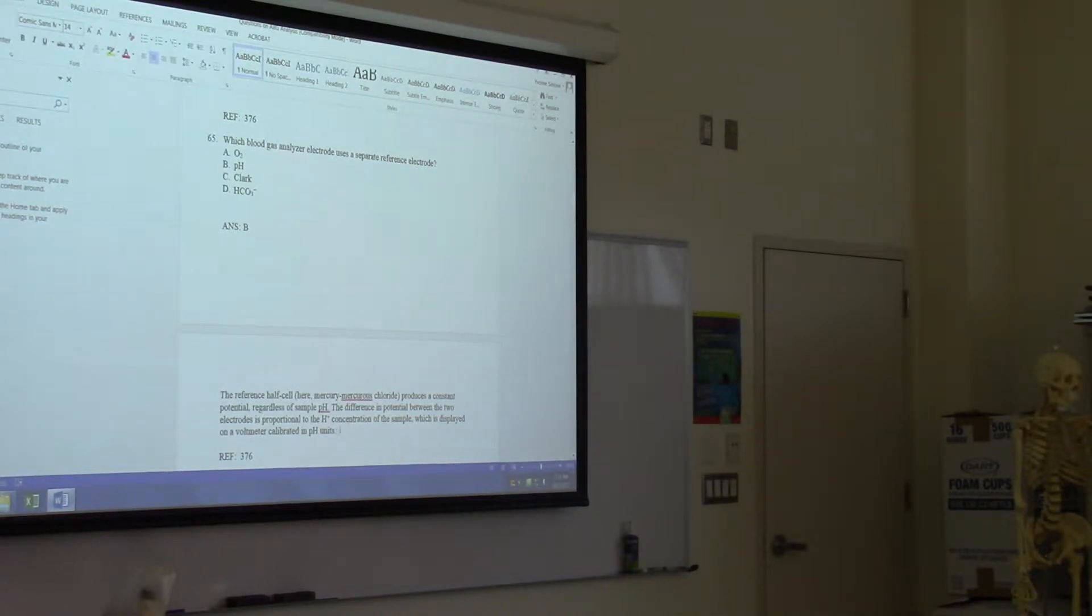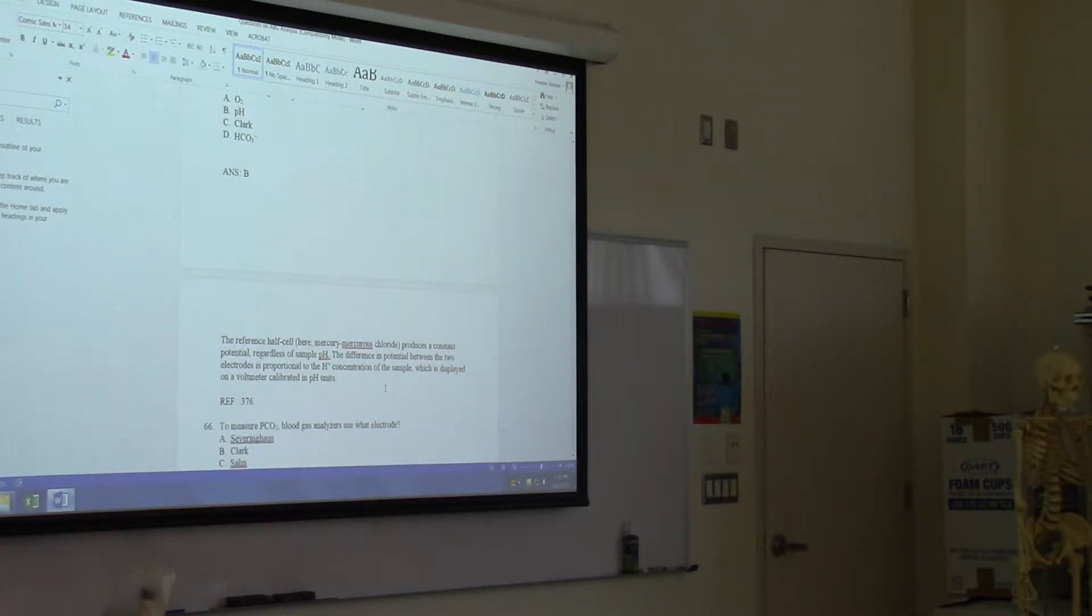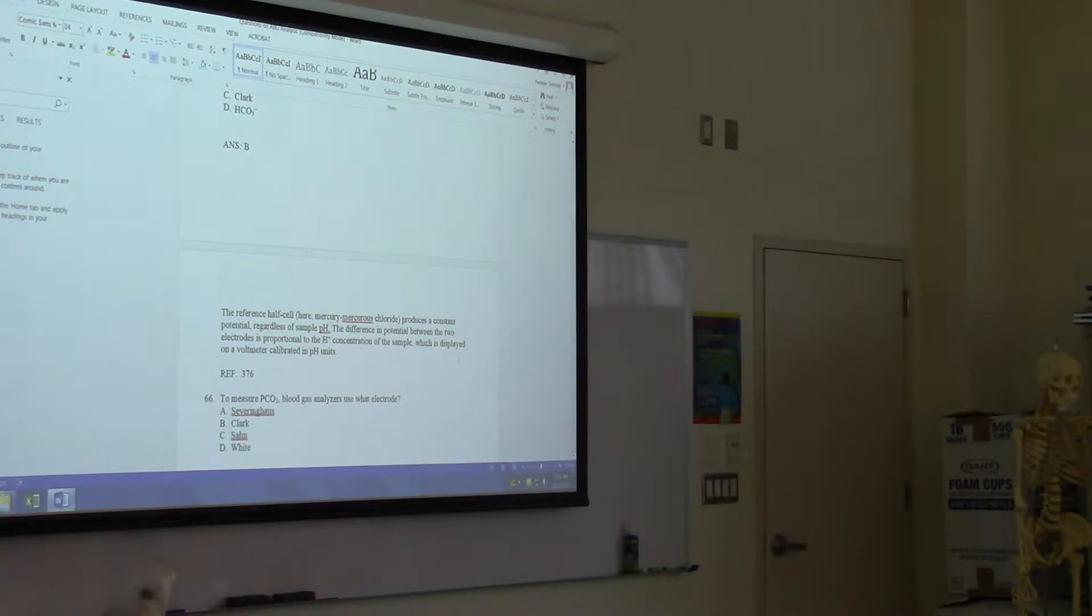There you go. To measure PCO2, blood gas analyzers use what electrode? Severinghouse. You have Severinghouse for CO2.